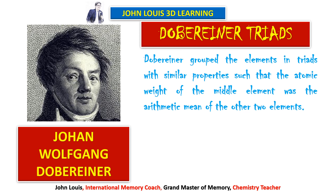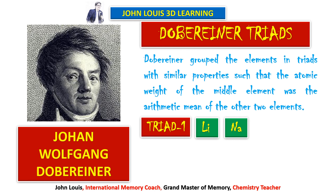For example, take lithium, sodium and potassium. The atomic weight of lithium is 7 and potassium is 39. The average of these two is 39 plus 7 equals 46, divided by 2 equals 23 — which is exactly equal to the atomic weight of sodium, 23. So in a triad, the atomic mass of the middle element is the average of the other two, and these three elements are found to have similar properties.